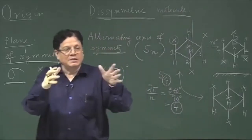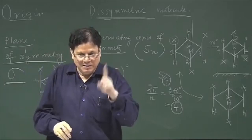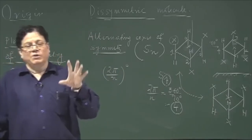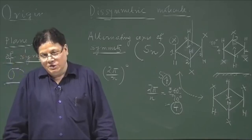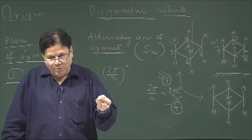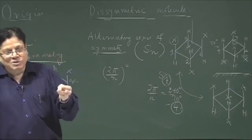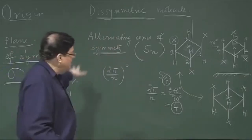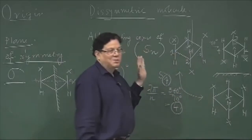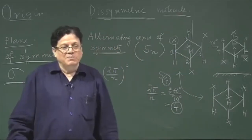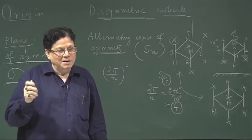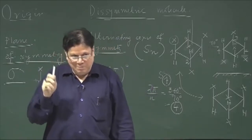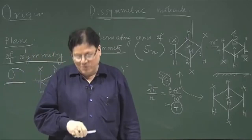A different name is needed for molecules lacking only the three relevant symmetry elements. Such molecules are called dissymmetric molecules. Dissymmetry means devoid of three elements: i, sigma, and Sn. The minimum and sufficient condition for chirality is that the molecule should be dissymmetric — devoid of i, devoid of sigma, and devoid of Sn. Importantly, the chiral center concept never appeared in this discussion; chirality is entirely dependent on the geometric, symmetry properties of the molecule.